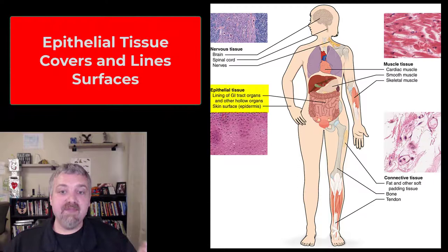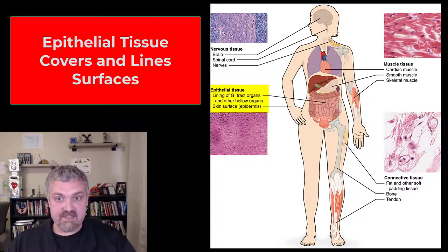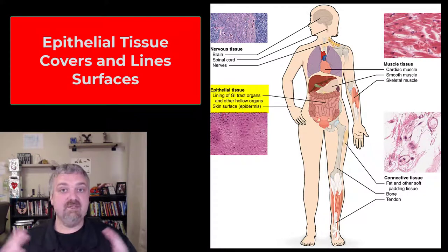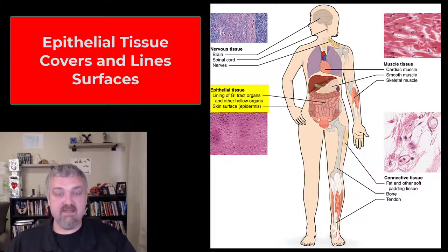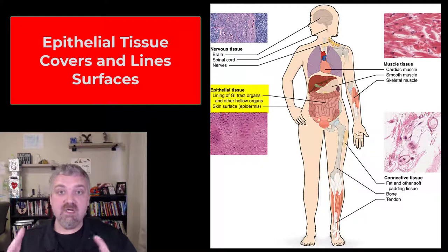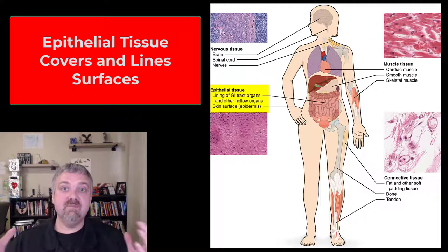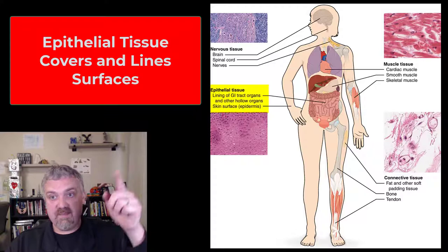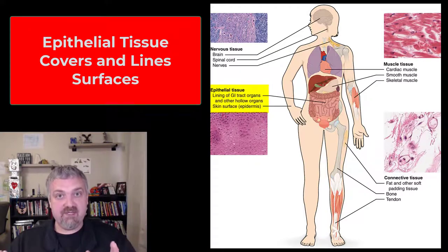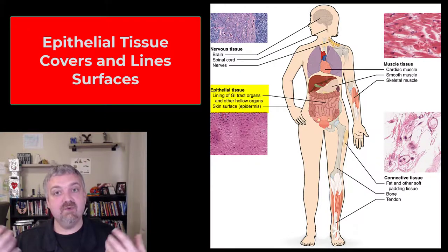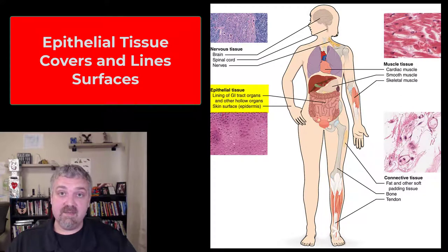Let's start by talking about epithelial tissue. The words I think of here are linings, coverings, and surfaces. Any surface of the body, like your skin, is going to be lined with epithelial tissue. And then any part of your body that's exposed to the external environment — think skin, but also your GI tract from your mouth to your anus, your respiratory tract, your genitourinary tract, your reproductive tracts — those are all exposed to the external environment, so they're going to be lined with epithelial tissue.